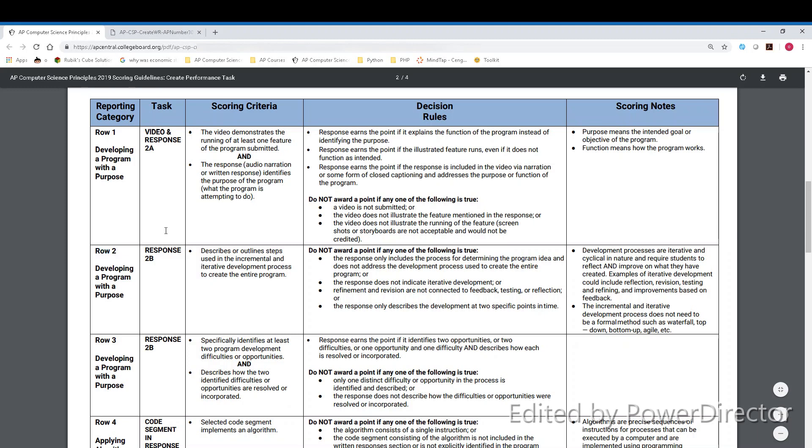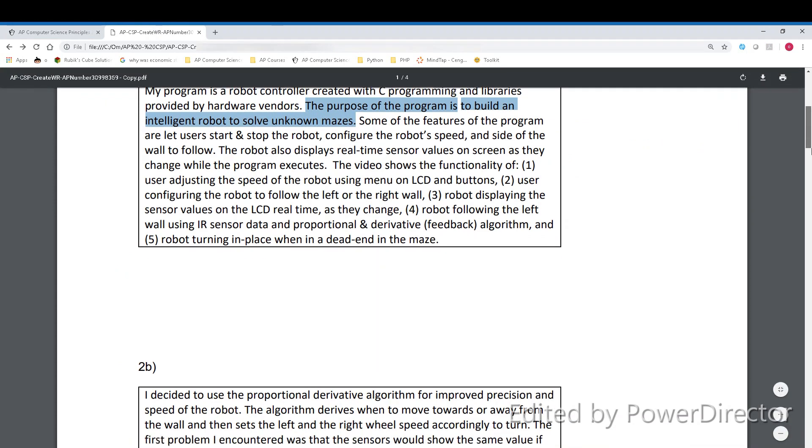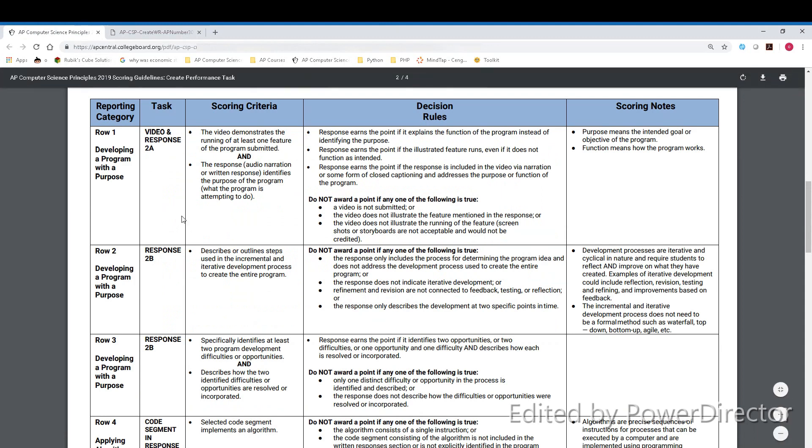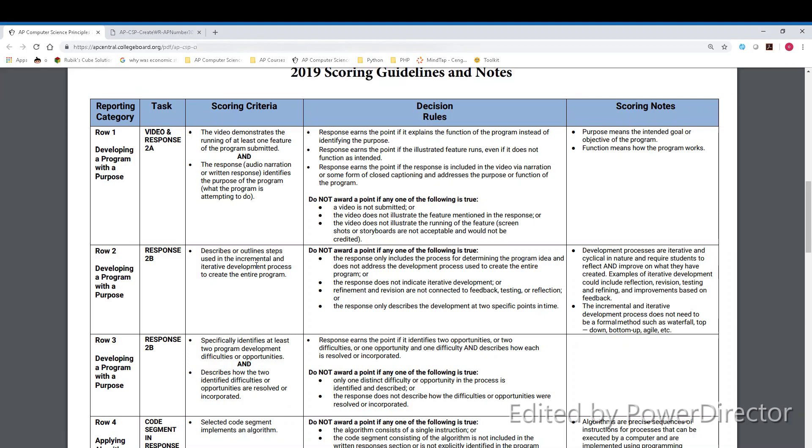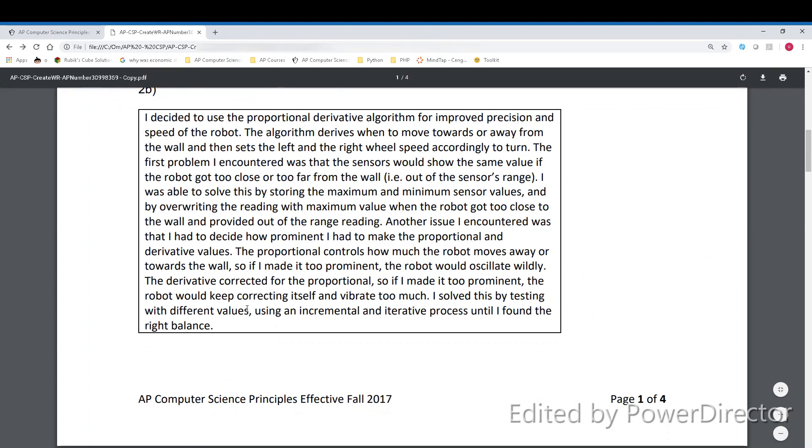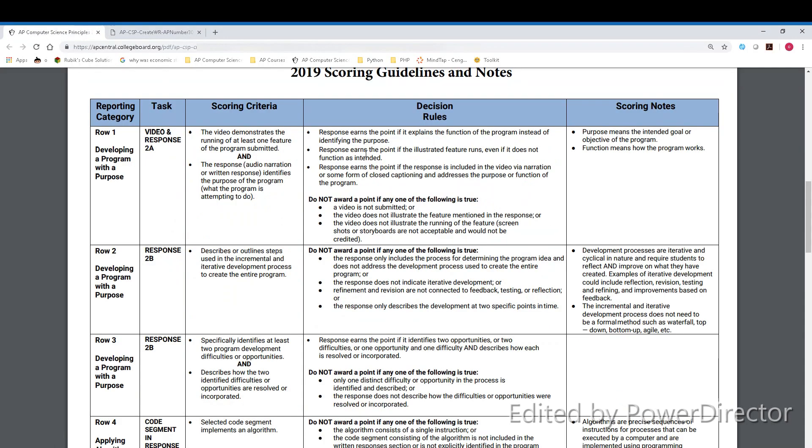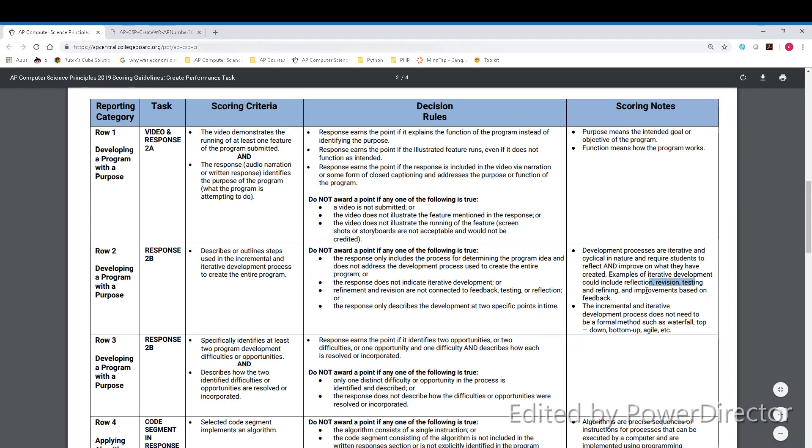The next category is row 2, which is for response 2b. The first segment of row 2 is describe or outline steps used in the incremental or iterative development process. All this really means is describe steps in an iterative development process, going in a cycle. It would involve you creating a program, then looking at this program, fixing problems, making your logic better, and then iterating through the program again. You can keep doing that, and that would be a method of iterative development. In my case, I mentioned how I used an incremental and iterative process until I found the right balance by testing with different values. This would be testing and refining, and improvements is a part of iterative development, so I'd get a point for row 2.